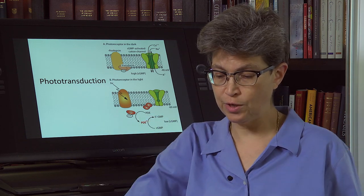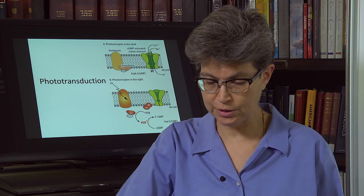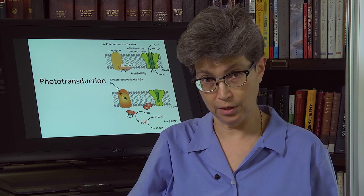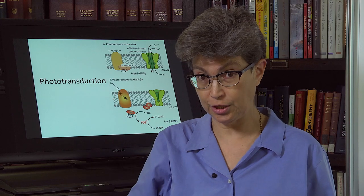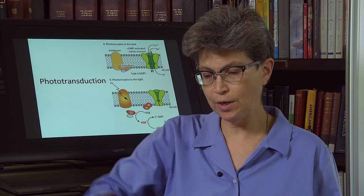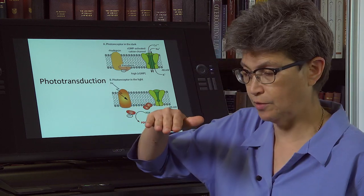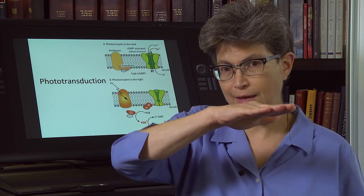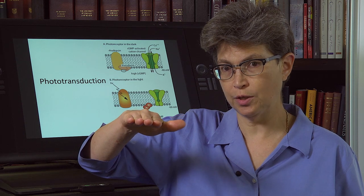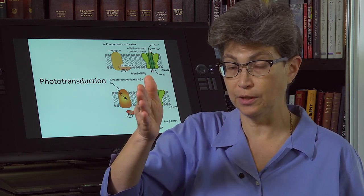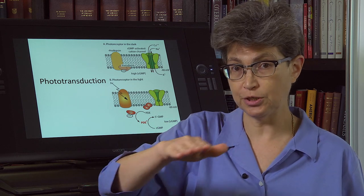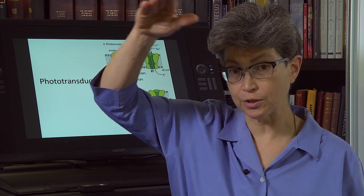If we were down at zero, we could only signal a change in one direction. What happens in the photoreceptors is there's a dark current, and that dark current enables one to signal either light, which causes a hyperpolarization, or more darkness, which causes a depolarization.